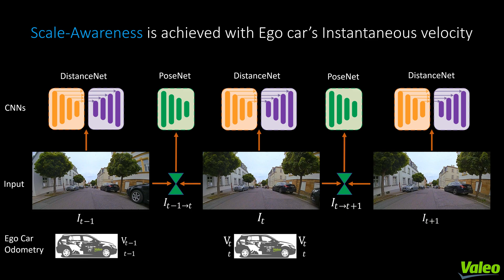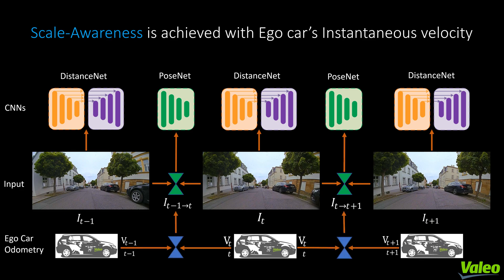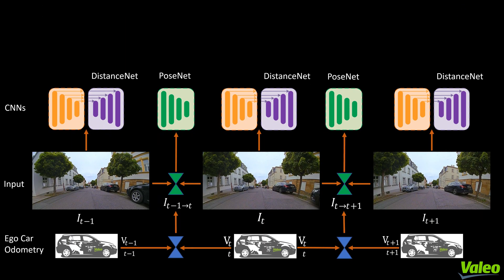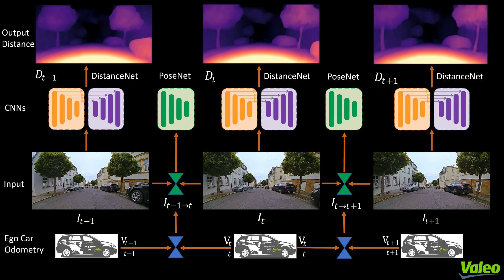We scale the estimated translation from the pose network with a simple velocity-time model to obtain metric distance maps. By introducing scale awareness to the network, we can obtain metric distance maps as output. This avoids scaling of the distance using LiDAR ground truth maps at test time, which mainly facilitates the distance maps' practical use case for self-driving cars.